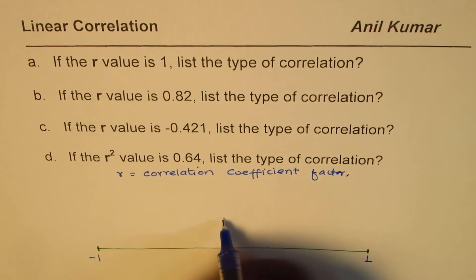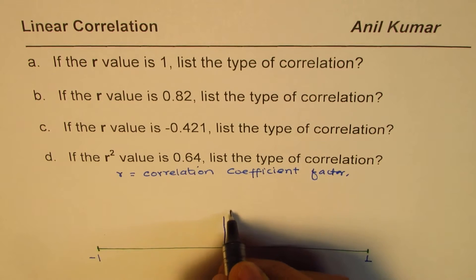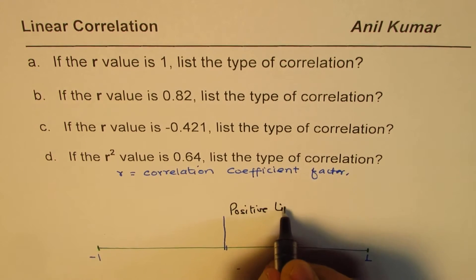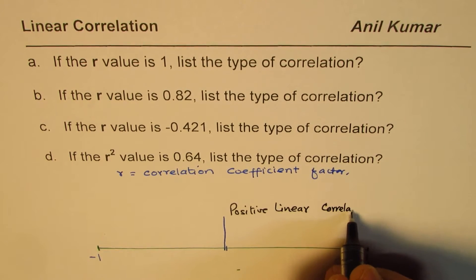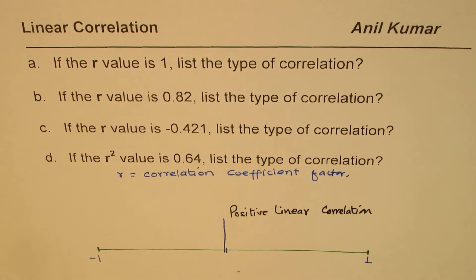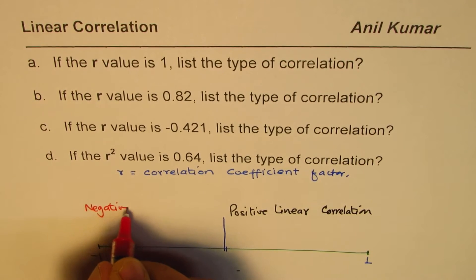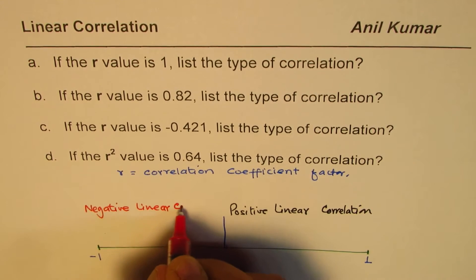Based on whether it is negative or positive, we say it is positive linear correlation if the value is positive. However, if the value is negative, we will call it negative linear correlation.